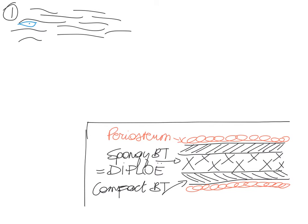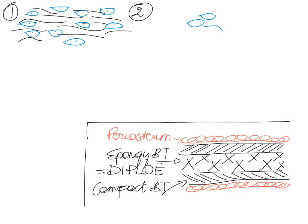Mesenchyme cells are scattered throughout. Remember, mesenchyme cells are the stem cells of pretty much all of the connective tissue, which of course includes our bone tissues as well. Once the ossification process kicks in, these mesenchyme cells are going to start clustering towards the center of our structure that is going to become this flat bone.